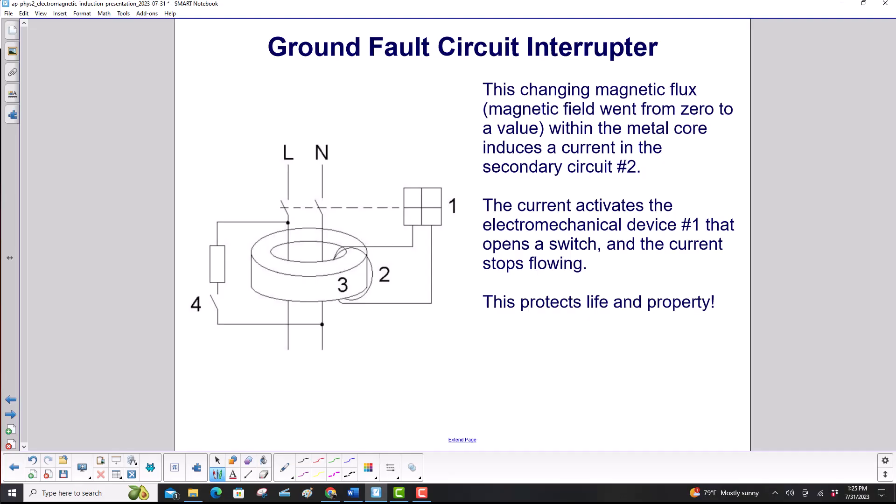This changing magnetic flux, and why did that happen? Well, the magnetic field, the net magnetic field in the beginning, was zero. But now it's going to a value because you still have this wire generating the magnetic field. No magnetic field over here, so it's not canceling anything. So what happens? Changing magnetic flux.